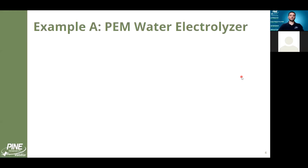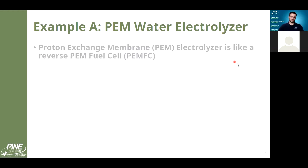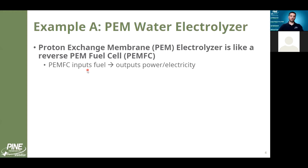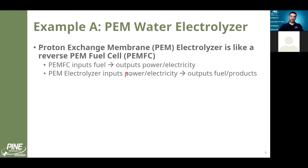The first example involves someone who submitted data studying a PEM water electrolyzer — proton exchange membrane. For those familiar with PEM fuel cells, this electrolyzer is basically a reverse PEM fuel cell. In a fuel cell, you provide hydrogen and oxygen, it outputs water, and you get electricity out. An electrolyzer is essentially the exact opposite: you input power and get fuel out. For example, in graduate school we had pressurized hydrogen and oxygen gas in the lab provided by an electrolyzer.